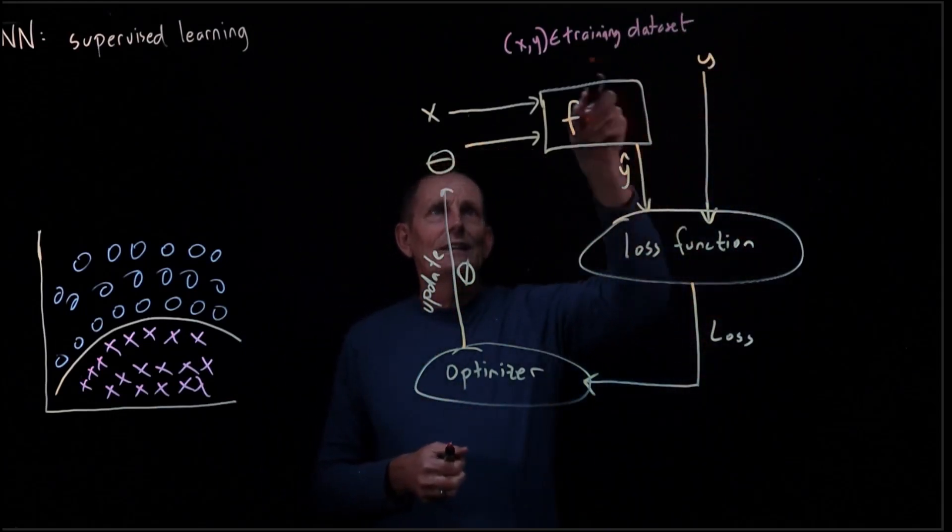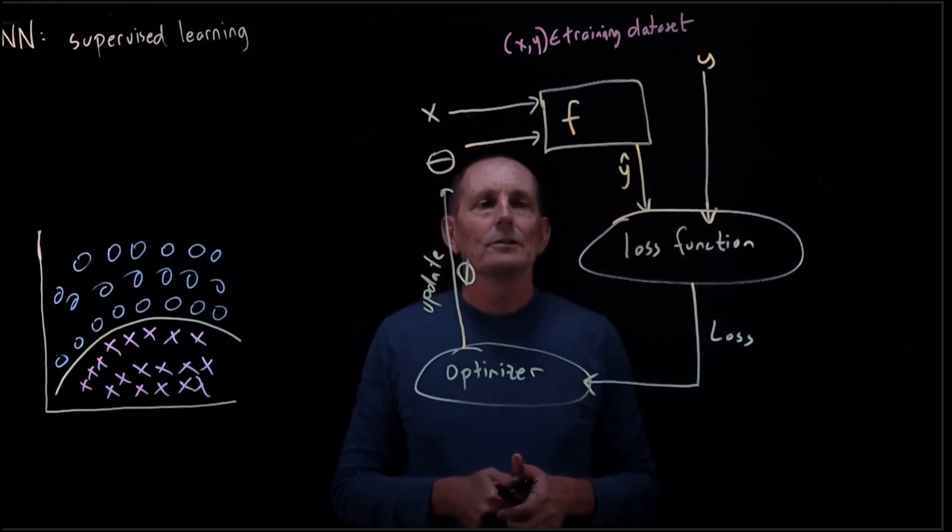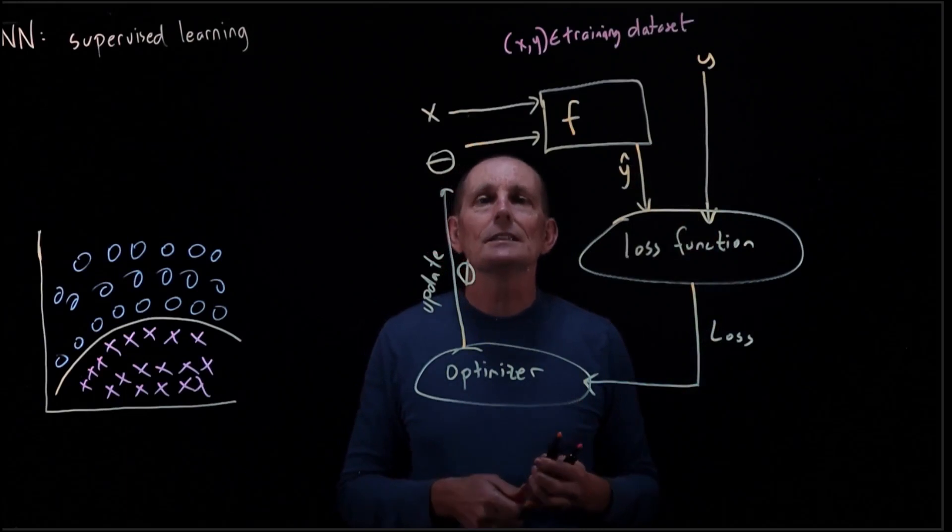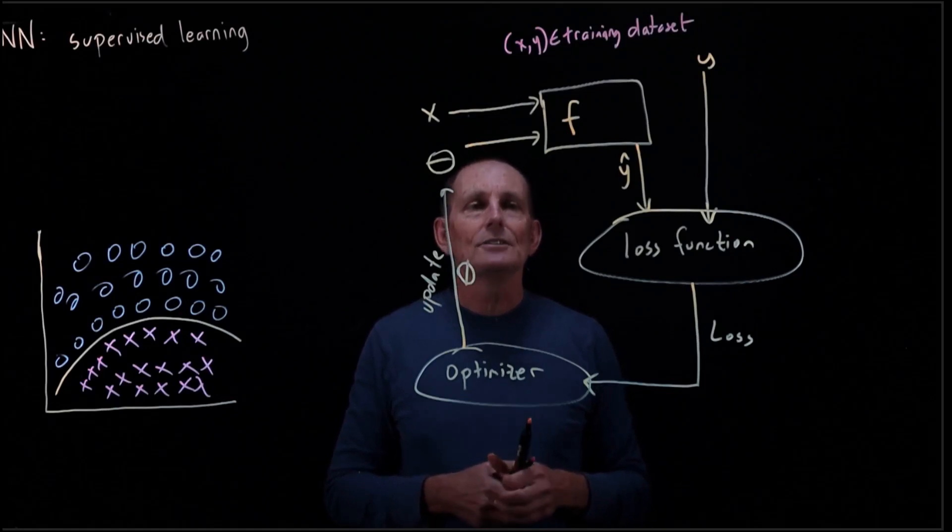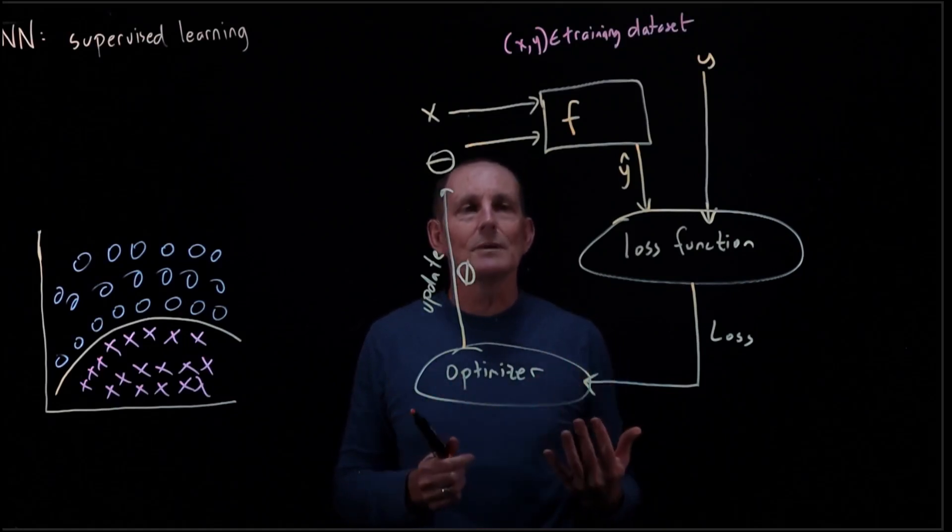This is the basics of neural network. Neural networks. This is called gradient descent. We'll talk at great length about this.